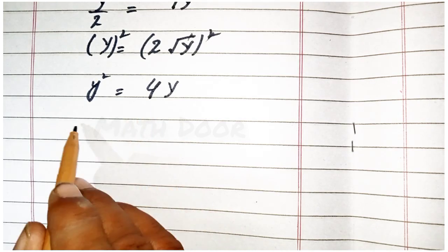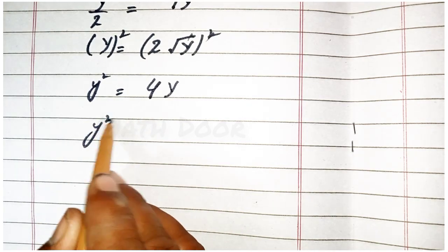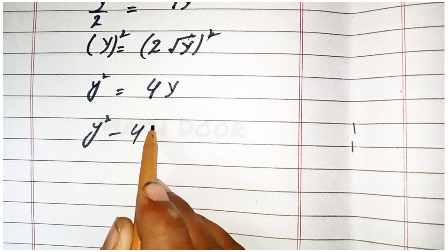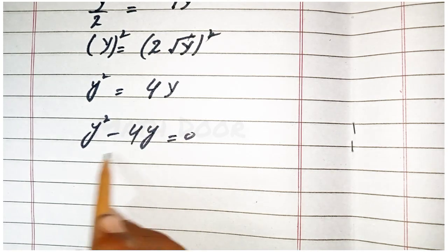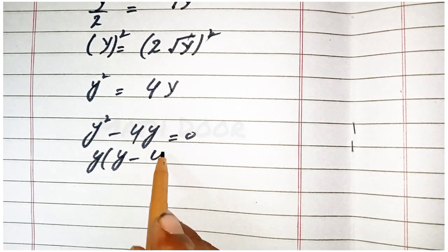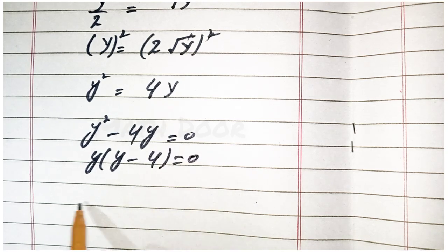We take this one into the left side of the equation, this becomes y square minus 4y is equal to 0. Take y common from here, this becomes y minus 4 is equal to 0.